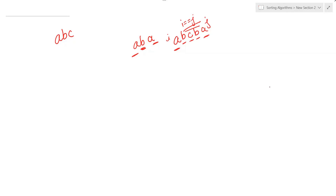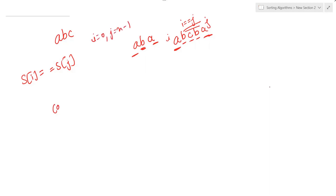There are two possibilities when comparing characters — either they are equal or not. The base conditions are: if i becomes greater than j, we stop; if i equals j, we return 1 — that's a palindrome. If s[i] equals s[j], it means the first and last characters of that particular string are the same, so we can consider that a palindromic subsequence. We then make recursive calls to check the remaining characters.